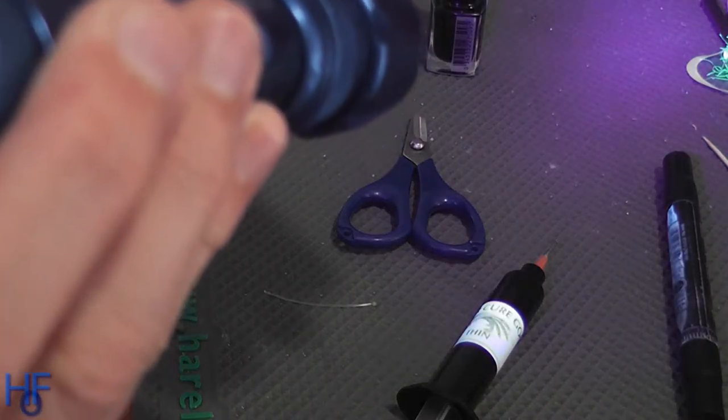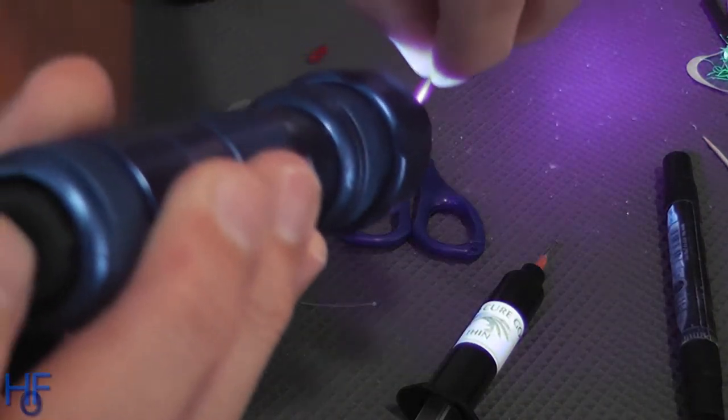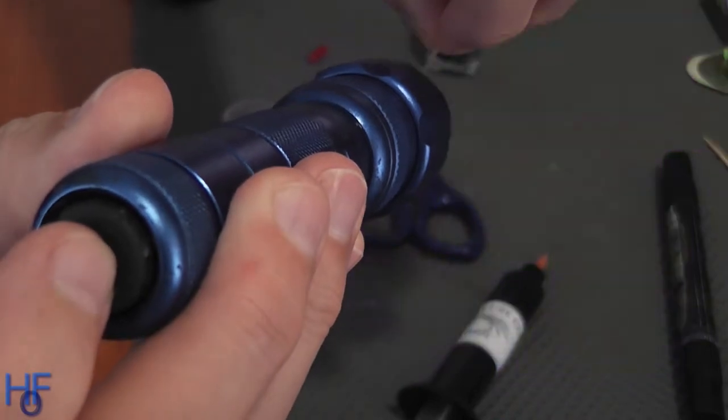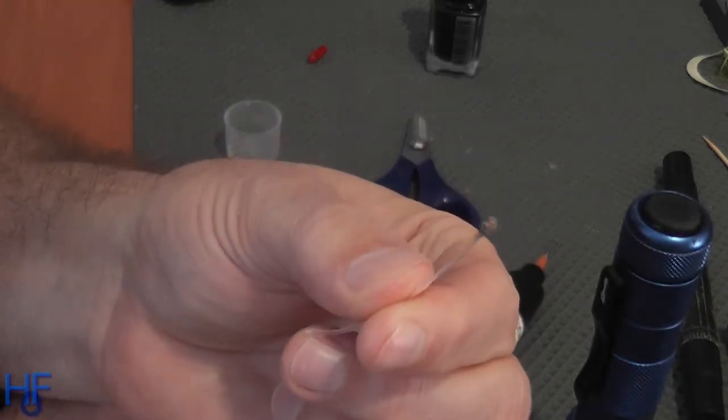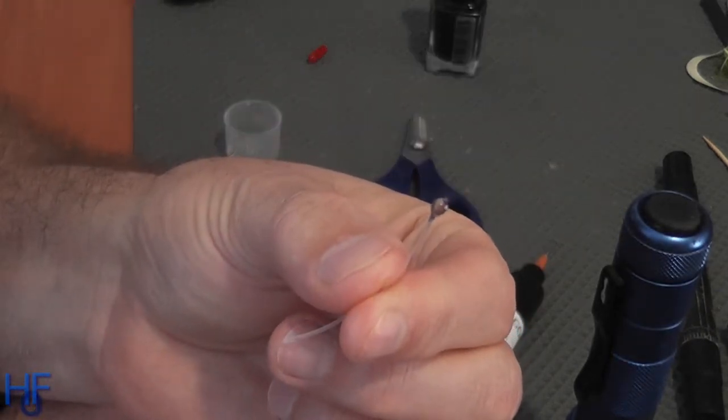And then just hit it with the UV torch. So that's the first one done. So that's hard. So that's clear, but with a black pupil inside it, you can just see the black there.